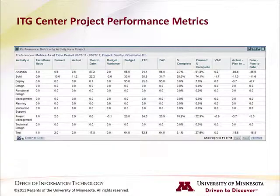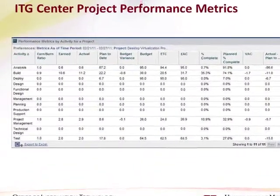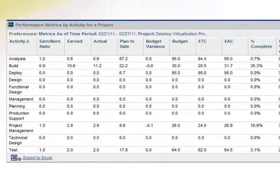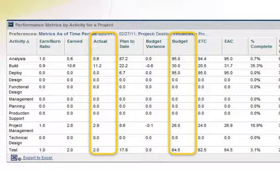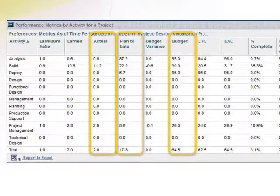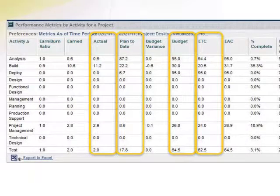The four core metrics that we've just been defining are displayed in the Project Performance Metrics portlet. You can see what was budgeted, what was actually used or burned, what should have been used by this point in the project, and what the estimated time to complete is for each activity. These values are all drawn directly from either project work plans or from data submitted in approved timesheets.